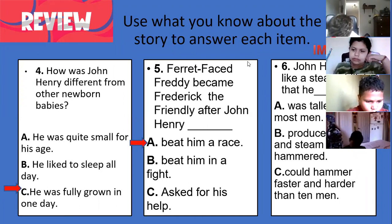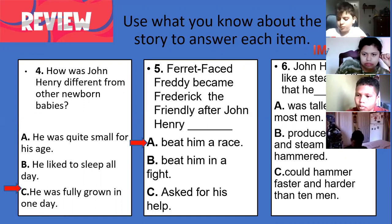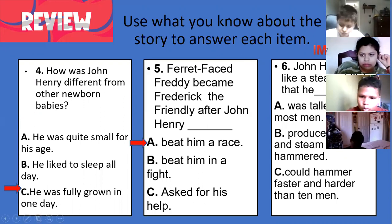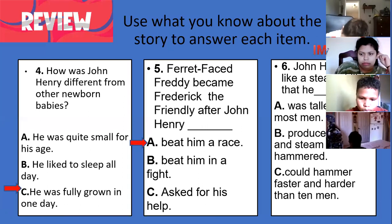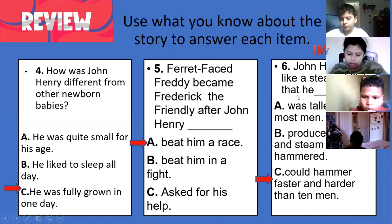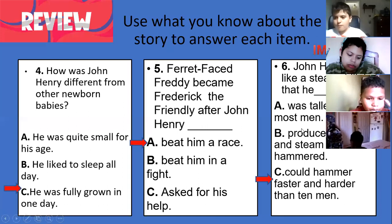Number six: John Henry was like a steam drill — he was taller than most men, produced smoke and steam when he hammered, and hammered faster and harder than ten men. This passage talks about when John Henry helped to build a tunnel through a mountain. The workers had a drill.